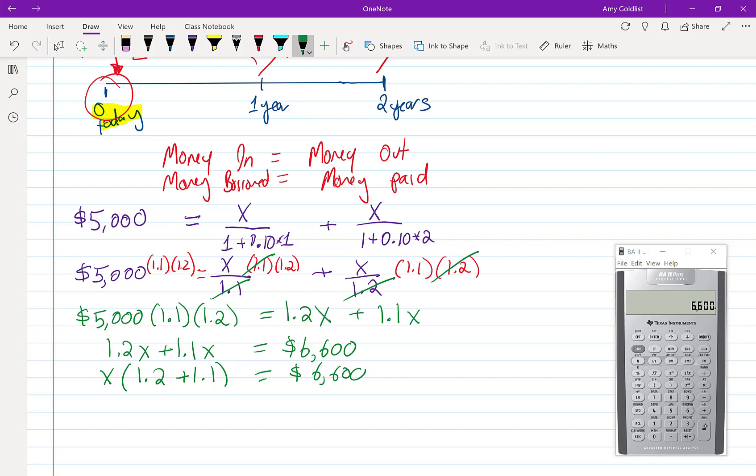So 1.1 plus 1.2 is 2.3. So I have 2.3X equals 6,600.